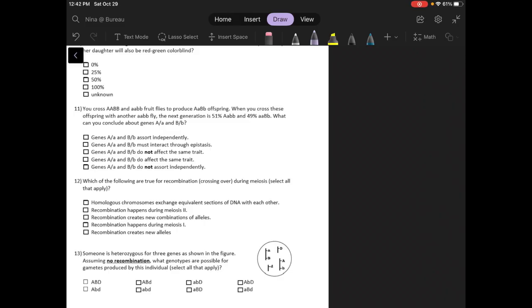Okay, number 11 is also slightly challenging, requires a little bit more thought. So let's go over that one. You cross a big A, big A, big B, big B, and little A, little A, little B, little B fruit flies to produce big A, little A, big B, little B offspring. When you cross these offspring with another little A, little B, little B, little B fly, the next generation is 51% big A, little A, little B, little B, 49% little A, little A, big B, little B. What can you conclude about the genes A and B?